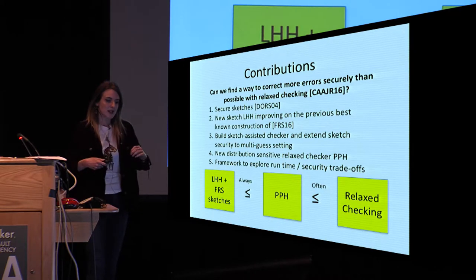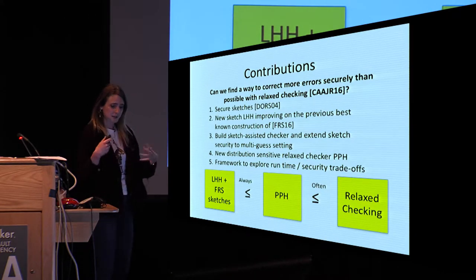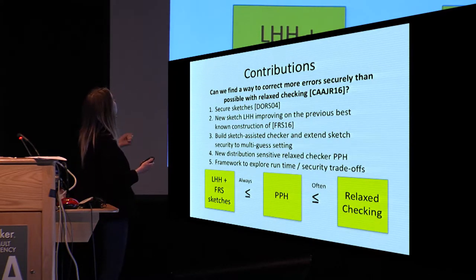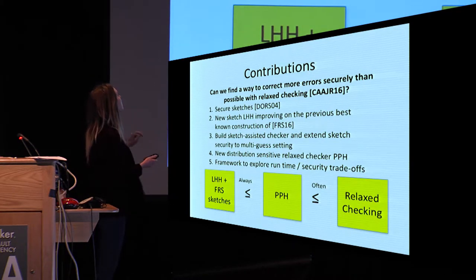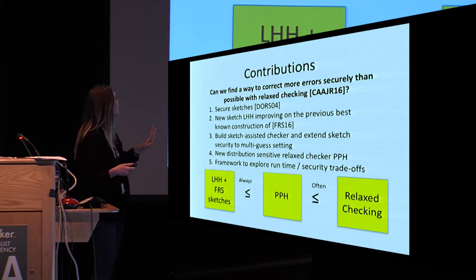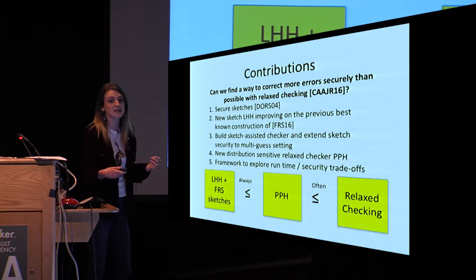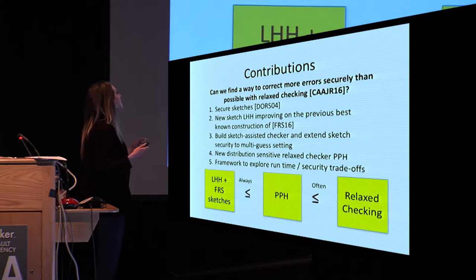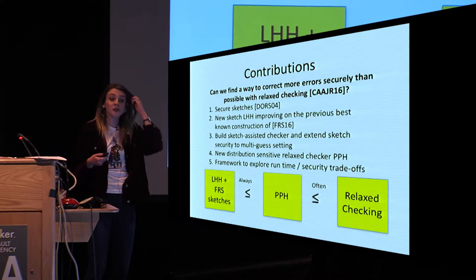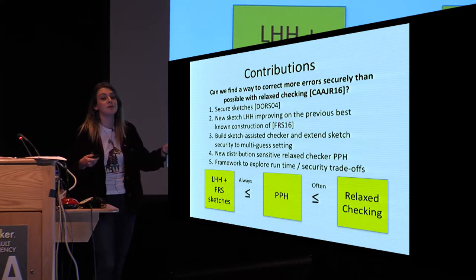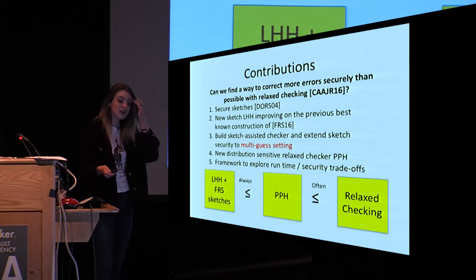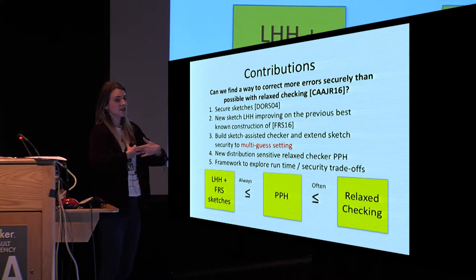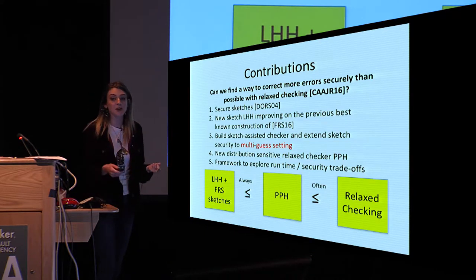The core question is: can we correct more errors securely than is possible with relaxed checking? To explore this, we use secure sketches. Our first contribution is a new sketch with improved security bounds—close to optimal—over the previous best known construction by Fuller et al. We show how to build sketch-assisted checkers, extending sketch security to the multi-guess setting. We also define a new variant of relaxed checking. Our framework for comparing these approaches yields a somewhat surprising result: the seemingly most rudimentary relaxed checking scheme turns out to offer a better time-security trade-off than the more sophisticated schemes using sketches, because sketch security deteriorates much more quickly than expected in the multi-guess setting.